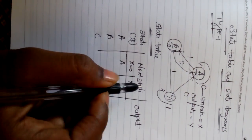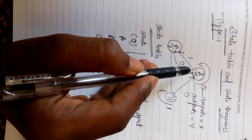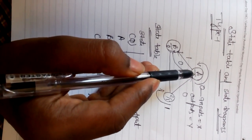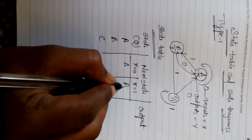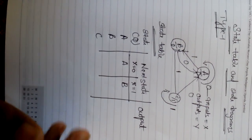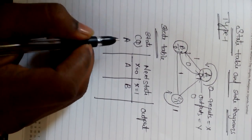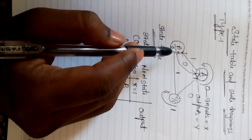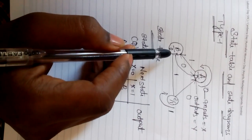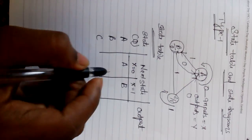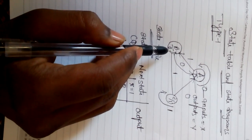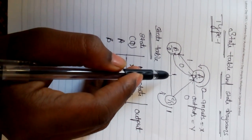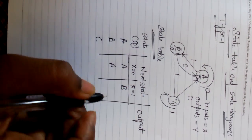When X is equal to 1, the state changes from A to B. At state B, when we give input as 0, it changes from B to A. When we give input as 1, the state changes from B to C.